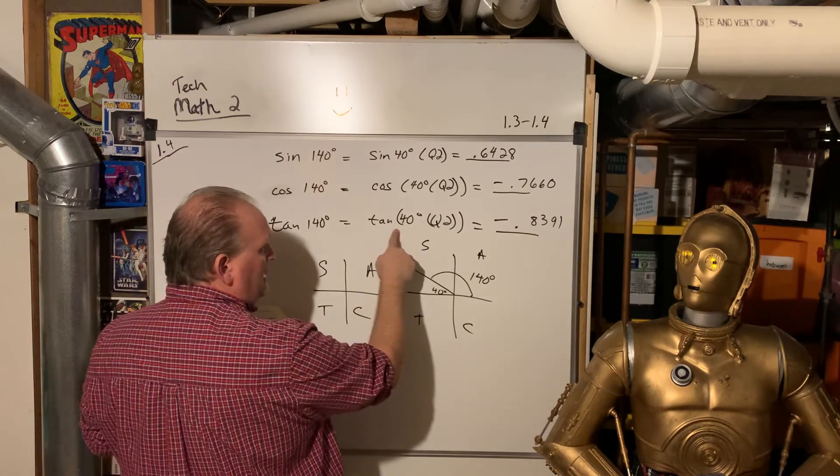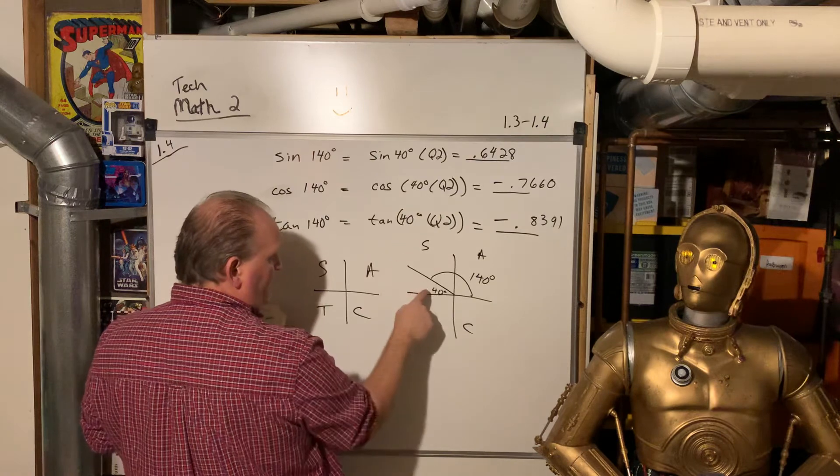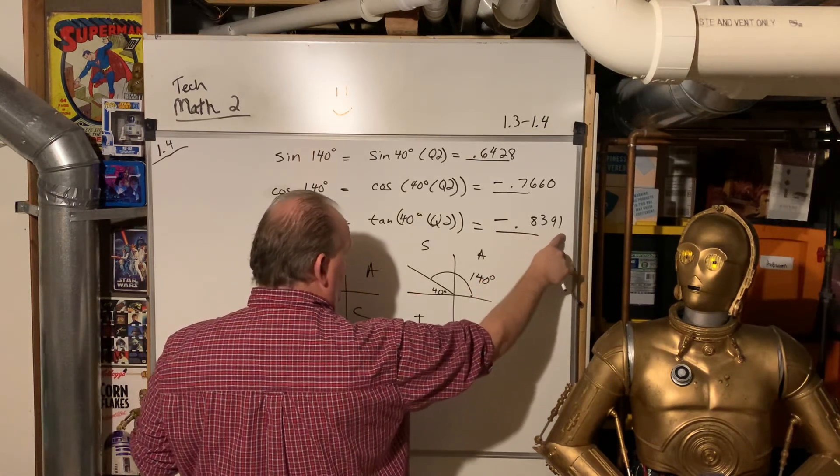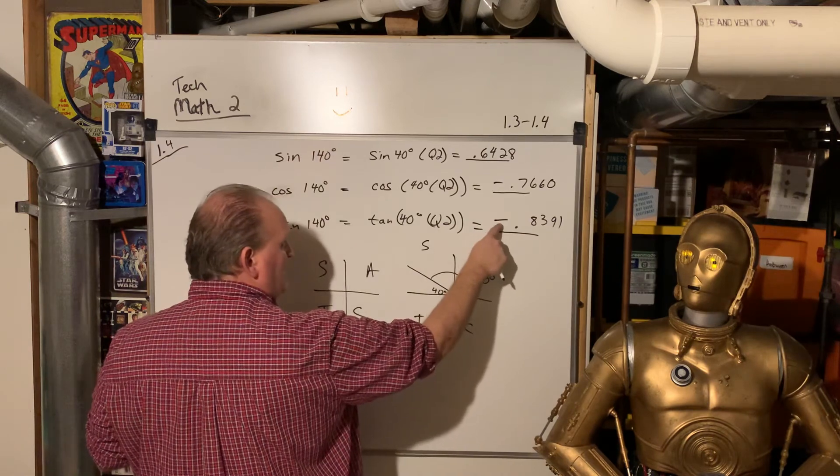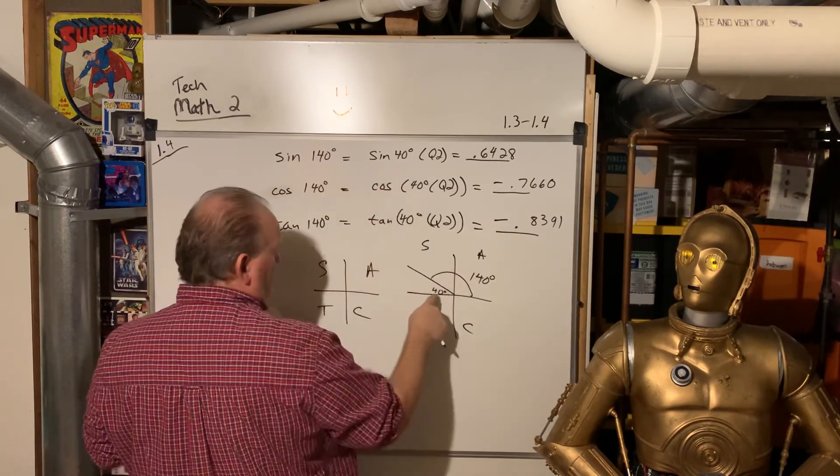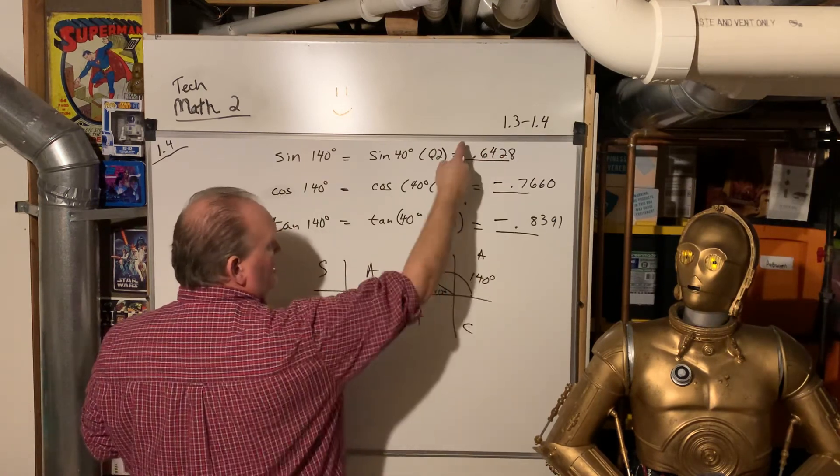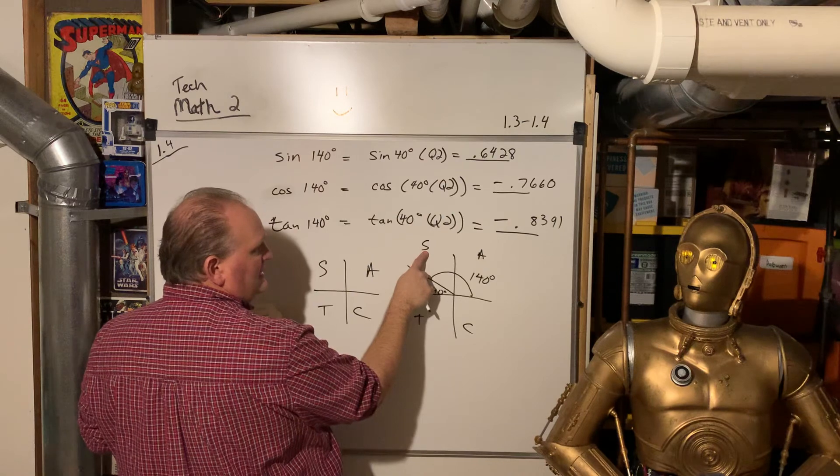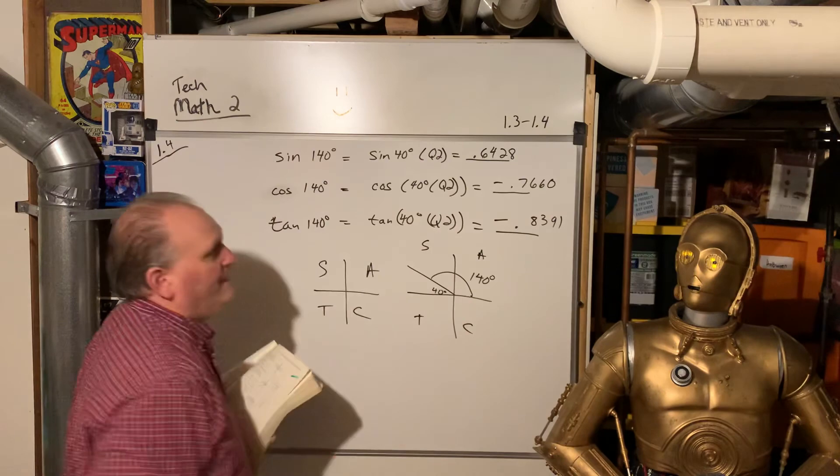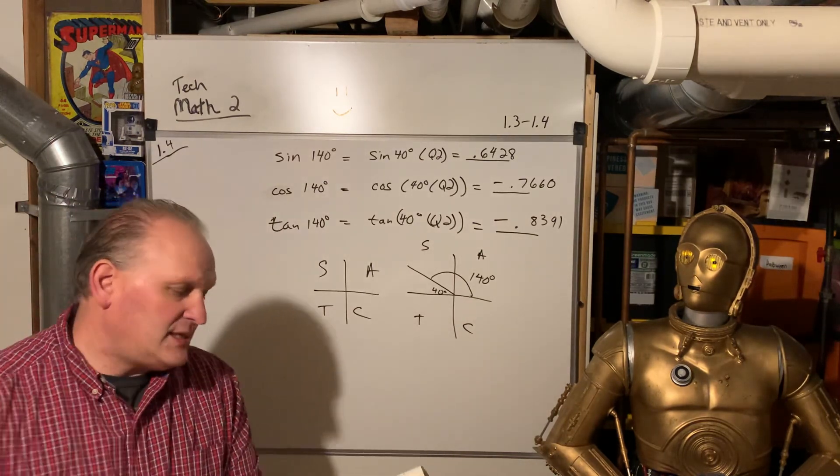Again, back in the day, if I wanted the tangent of 40 degrees, I would look up on the chart, tan 40, and the chart would read out 0.8391. And then I'd have to supply the negative with it. The sine of 40, I'd look that up on the chart, 0.6428. And I'd have to make sure, is it positive or negative, since it's signed in the second quadrant, it's positive. All right.